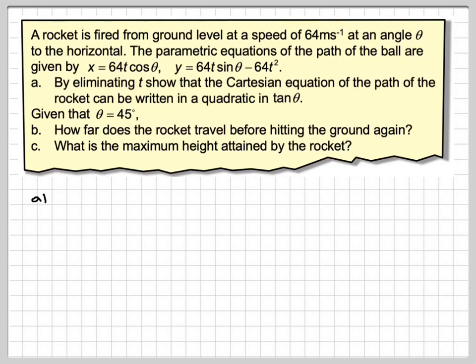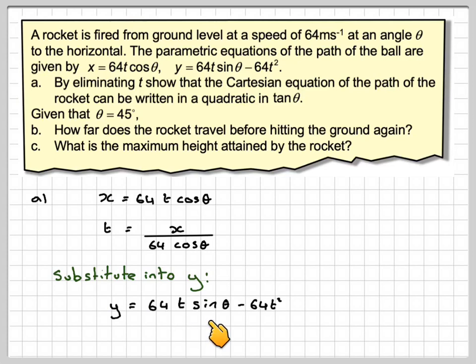For part A, we've got x is 64t cos θ, so we're going to have to eliminate t and find the Cartesian equation. If I rearrange that, we get that t is x over 64 cos θ. And if we now substitute into y, so y was this, y is 64t sin θ minus 64t².